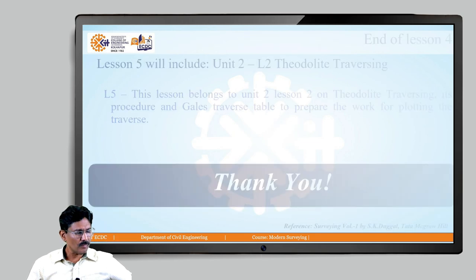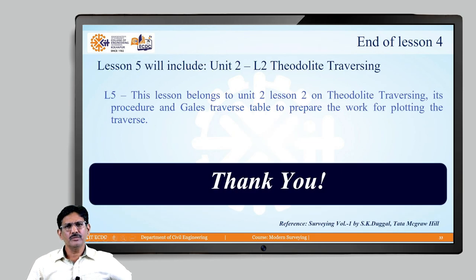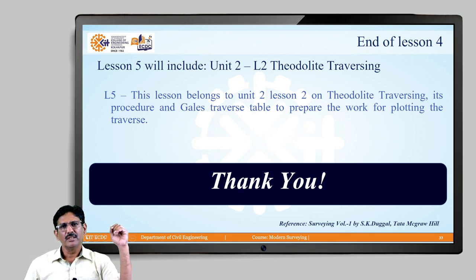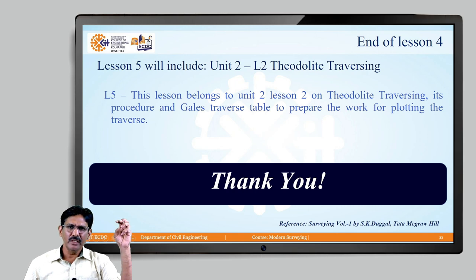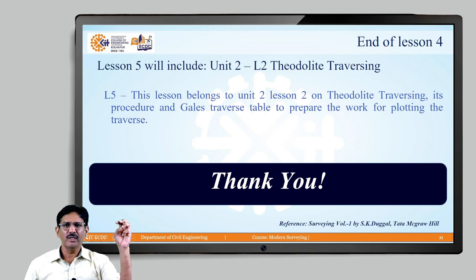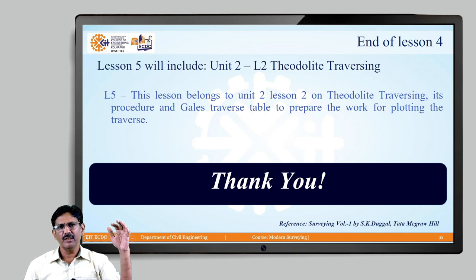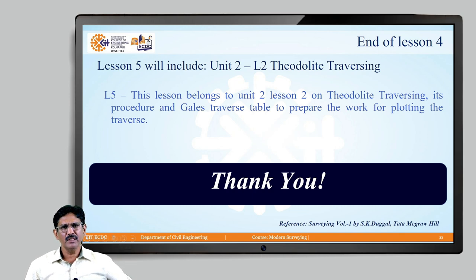We have now covered the basic methods of measuring horizontal and vertical angles with the theodolite. In the next chapter, Unit 2 Lesson 2, we will be discussing theodolite traversing — what it is, how to perform polygon measurements, and how to prepare a traverse table for plotting the traverse. We will see this in the next class. Thank you.